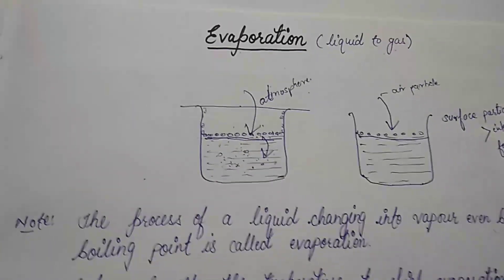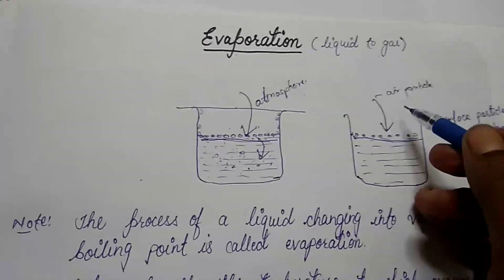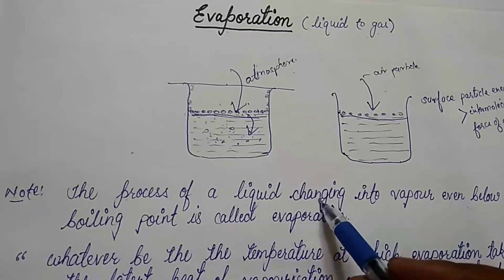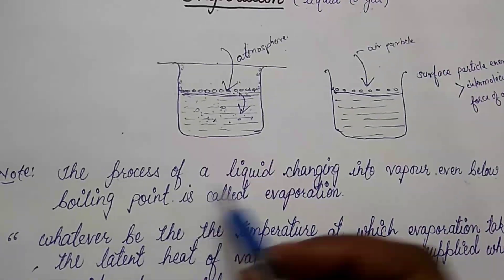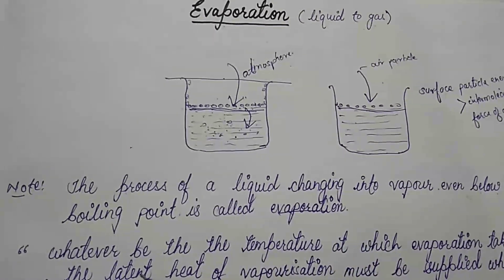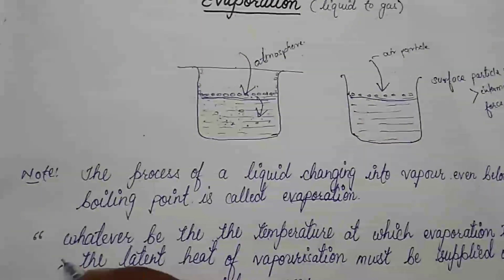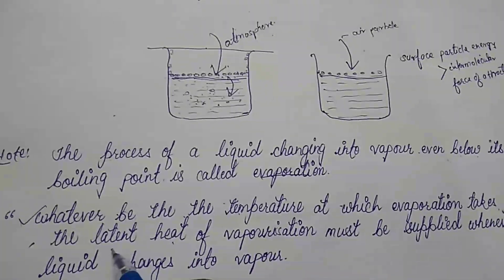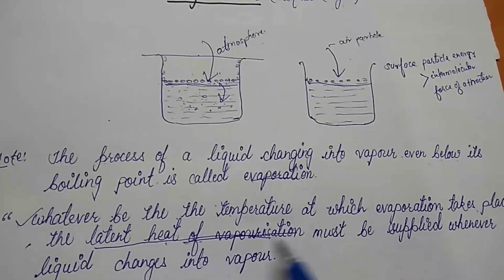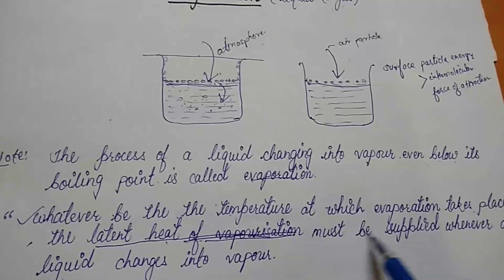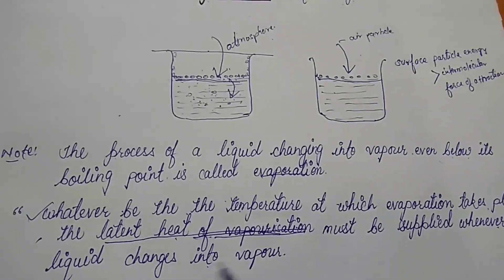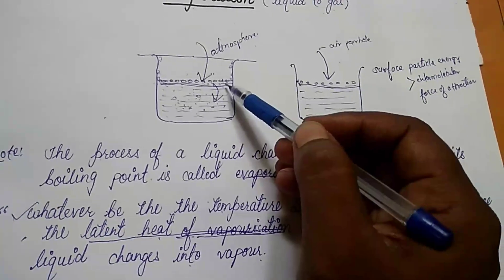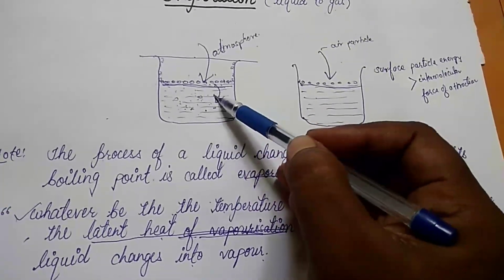In this way, the liquid continuously changes into vapor form at any temperature. The process of liquid changing into vapor even below its boiling point is called evaporation. Whatever be the temperature at which evaporation takes place, the latent heat of vaporization must be supplied. Whenever a liquid changes into vapor, these particles take the latent heat of vaporization from their surroundings to convert from liquid into vapor form.